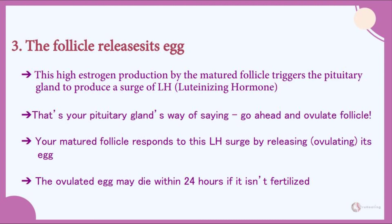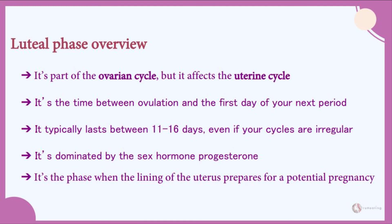After ovulation comes the luteal phase, the last phase of the menstrual cycle. The luteal phase is part of the ovarian cycle and is the time between ovulation and the first day of your next period. It typically lasts 11 to 16 days, even if your cycles are irregular. Remember, the follicular phase is the one with all the variability — if you have PCOS, the follicular phase is to blame, not the luteal phase. Once ovulation occurs, even with PCOS, if your body manages to ovulate you will get your period within 11 to 16 days.